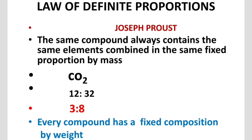For example, carbon dioxide contains carbon and oxygen. Carbon has a mass of 12 grams, and 2 oxygen atoms give 32 grams. The ratio of carbon to oxygen is 12:32, which simplifies to 3:8. Whether CO₂ is formed by burning carbon, heating sodium bicarbonate, or the action of dilute HCl on marble, the carbon-to-oxygen ratio is always fixed at 3:8.